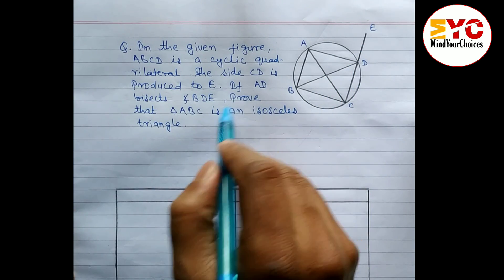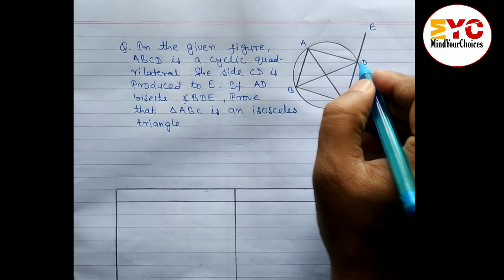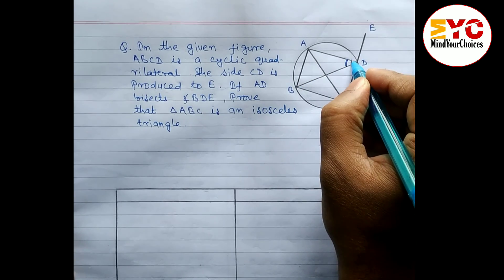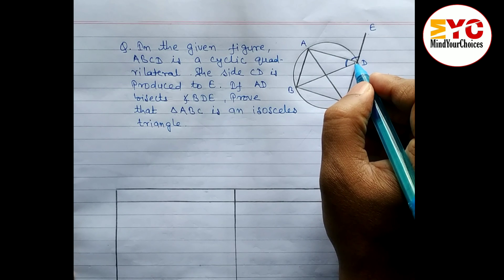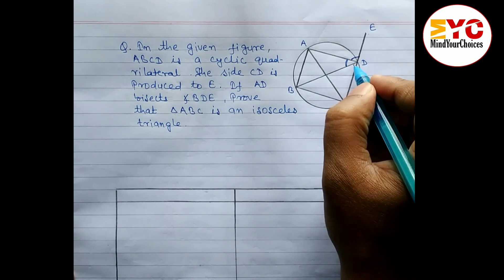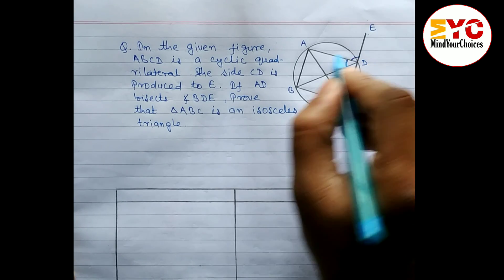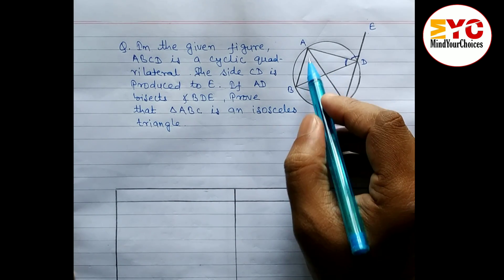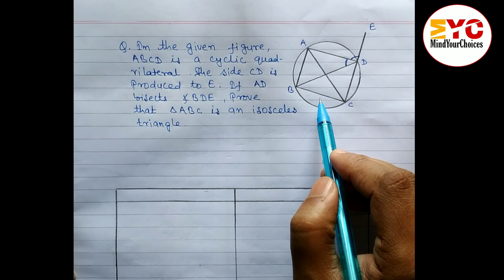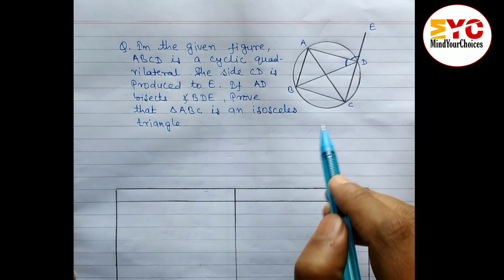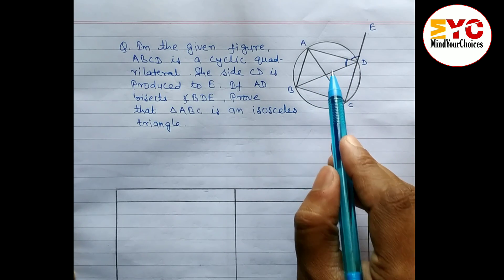AD bisects angle BDE, meaning AD divides the whole angle BDE into two equal parts — this part and this part are equal. For example, if one is 40 degrees, the other is also 40 degrees. We have to prove that triangle ABC is an isosceles triangle. Since no side lengths are given, we need to prove two angles are equal.